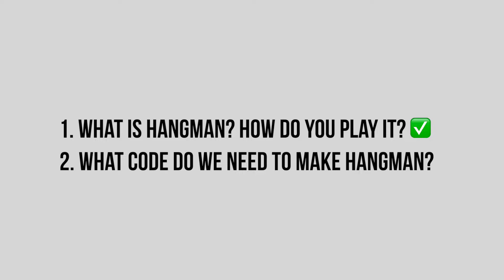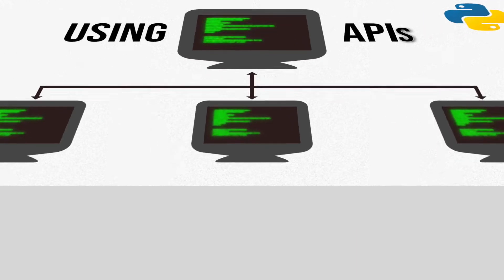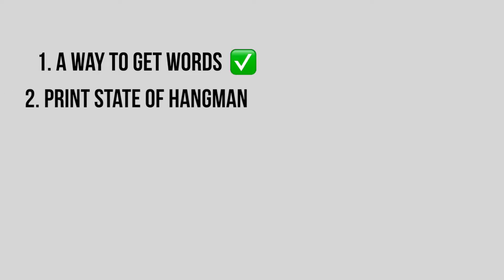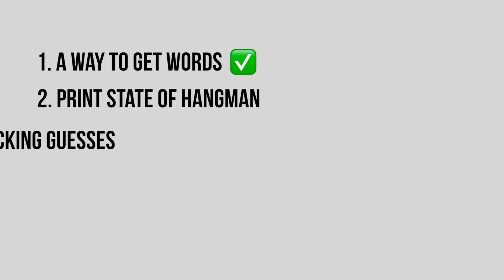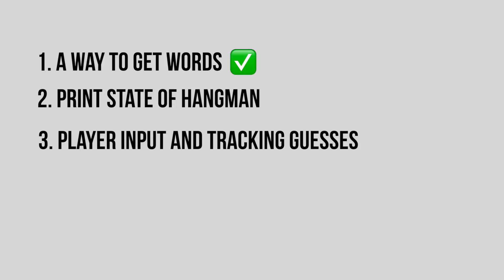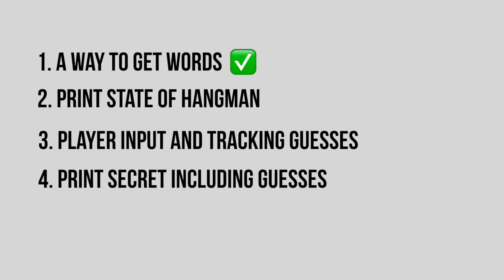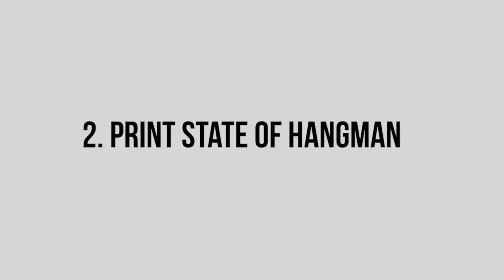Now we need to figure out what we will need to code, broken down into smaller tasks. Number one: we need a way to get words — we already did that in the last video. Number two: we need a way to print the state of the hangman platform, basically how to draw the hangman. Number three: we need a way to allow a player to input guesses and track whatever they've guessed. Number four: we need a way to print out the secret word including filled-in characters. Number five: game logic — did we win or lose yet?